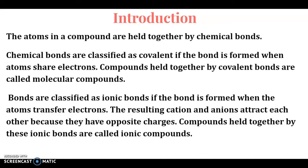Bonds are classified as ionic bonds if the bond is formed when the atoms transfer electrons. The resulting cations and anions attract each other because they have opposite charges. Compounds held together by these ionic bonds are called ionic compounds.